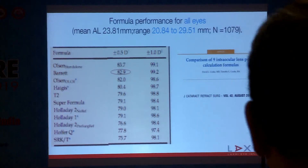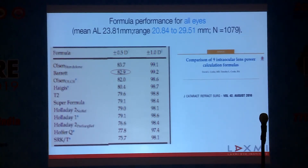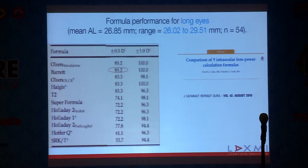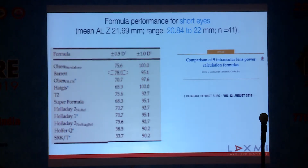Looking at the performance of Barrett Universal 2 formula across all axial lengths, the percentage of patients achieving within ±0.5 diopters is around 83%. In longer eyes, the success rate is more than 85%, and for shorter eyes — a challenge for any formula — the success rate is still 78%, which is much better than other formulas.